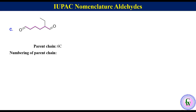We can do numbering from left to right or right to left, but right to left numbering is the correct one because it keeps a lower number to the substituted carbon. So the numbering will be 1, 2, 3, 4, 5, and 6.